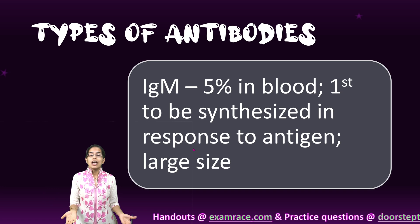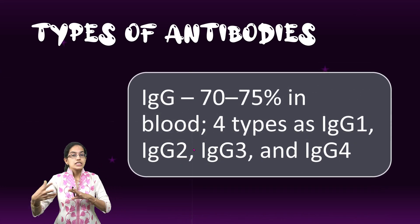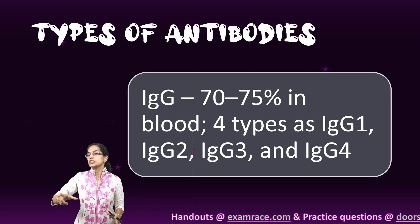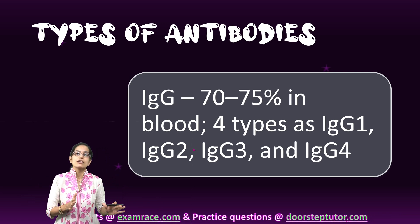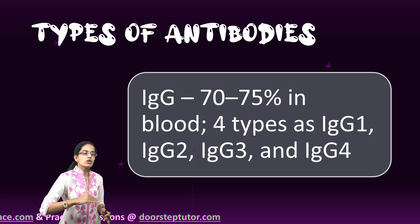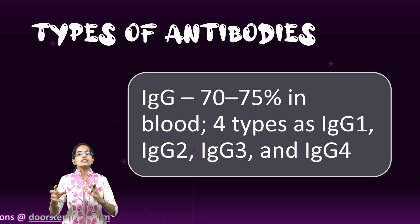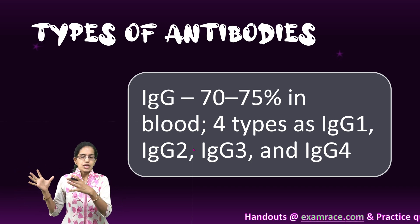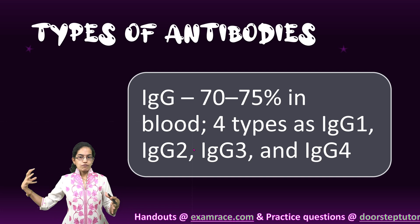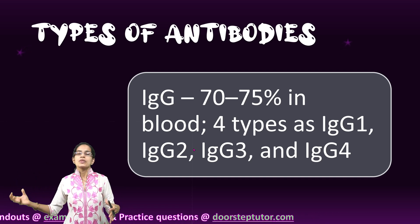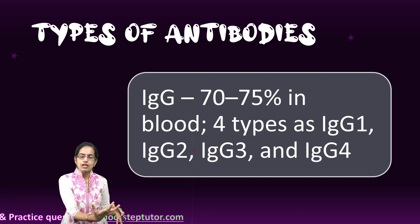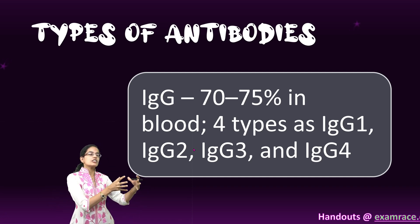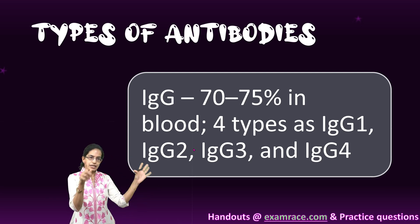After IgM, the next immunoglobulin is IgG, which develops 10 to 14 days after exposure. IgG is the component present in the highest proportion — 70 to 75% in blood. It is further divided into four subtypes and is a component of the humoral immune system, which is initiated by the larger IgM molecules present in the extracellular fluid. So the first response is IgM, and the next is IgG, initiated by the pentameric structures of IgM.